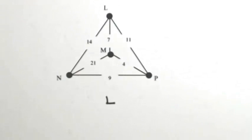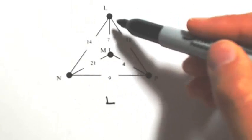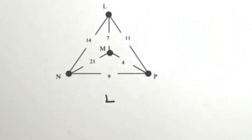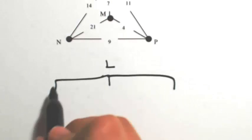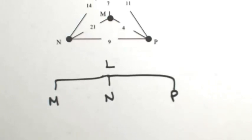From L, I have three possibilities. I can go to M, I can go to N, or I can go to P. So I'm going to build this out as three different branches. One going to M, one going to N, and one going to P.